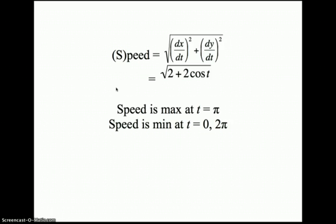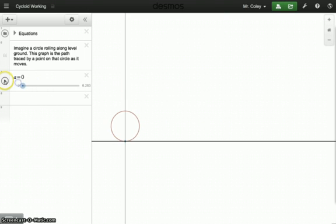Let me show you back on the graph, where those two points are. Alright, so the circle is rolling along, at time t equals pi, approximately there. The point's at the top, rolling in the same direction as the circle, it's traveling the fastest.